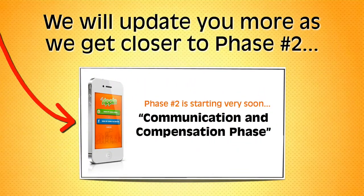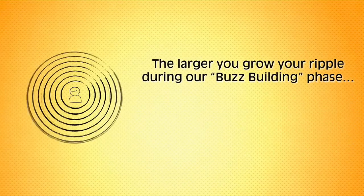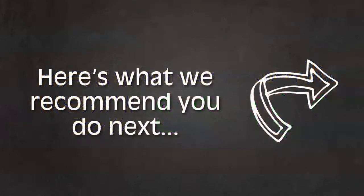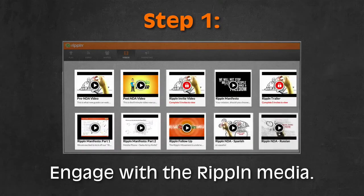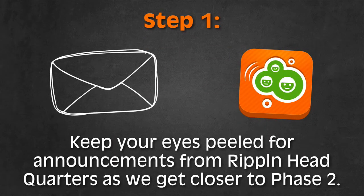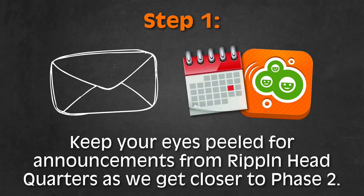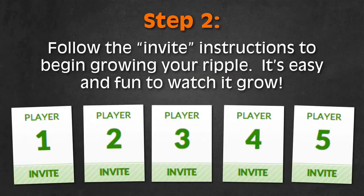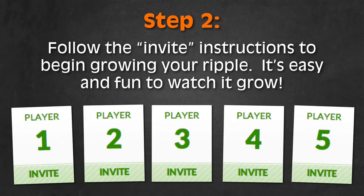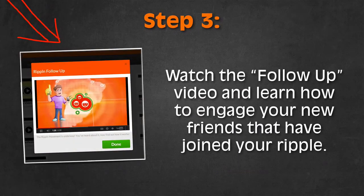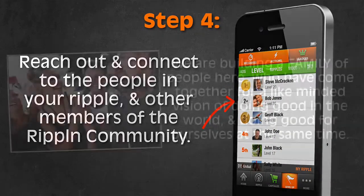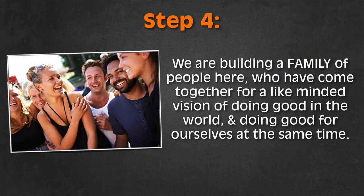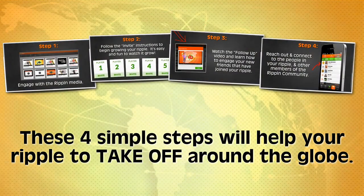We'll update you more as we get closer to phase two. The larger you grow your Ripple during our buzz-building phase, the greater your rewards can be once we activate commerce. Here's what we recommend you do next. Step one: engage with the Ripplin media — watch all the videos posted in your back office and keep your eyes peeled for announcements as we get closer to phase two. Step two: follow the invite instructions to begin growing your Ripple — it's easy and fun. Step three: watch the follow-up video and learn how to engage your new friends that have joined your Ripple. Step four: reach out and connect to the people in your Ripple and the other members of the Ripplin community. We are building a family of people who have come together for a like-minded vision of doing good in the world and doing good for ourselves.